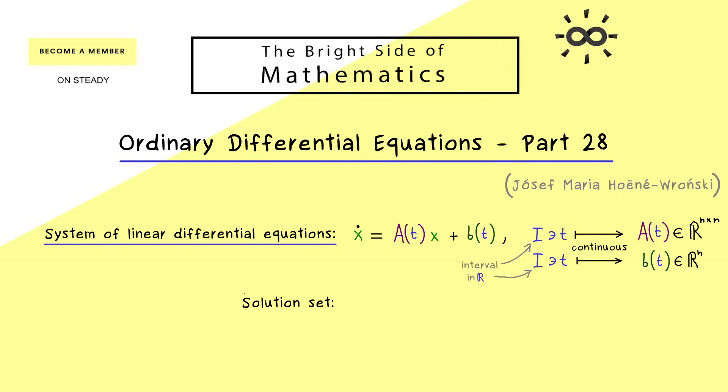We already know the solution set here because it's an n-dimensional affine subspace. This means S is just given by an n-dimensional subspace which is translated by a solution γ. So more concretely, γ here is just a particular solution of our system of ODEs from before. On the other hand, S₀ is just the n-dimensional solution space of the homogeneous part.